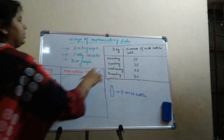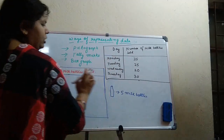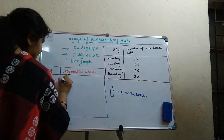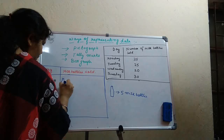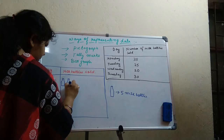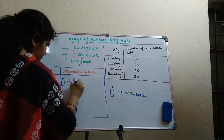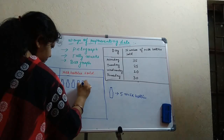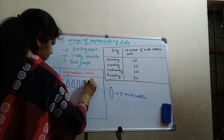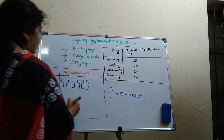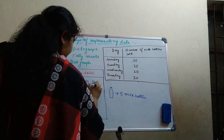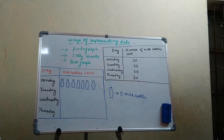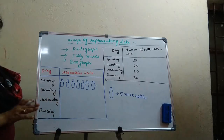On Monday we have 35 milk bottles sold. So for 35, how many such bottle pictures will you draw? 35 divided by 5 is 7. So you need to draw 7 milk bottles. Here we have 7 milk bottle pictures for Monday — but actually 35 milk bottles are sold.